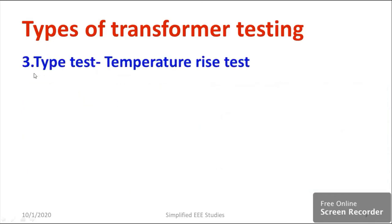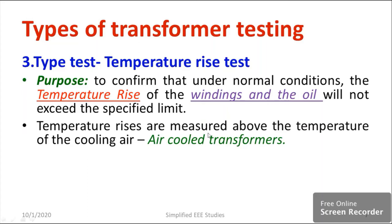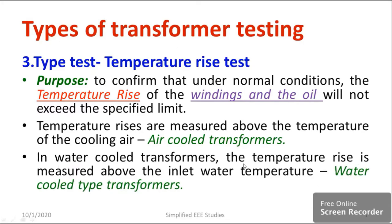I would like to discuss the third type of testing, known as the type test. The main purpose is to measure the temperature rise — whether it is normal or abnormal. To confirm that under normal conditions, the temperature rise of the windings and the oil will not exceed the specified limit. Temperature rises are measured above the cooling air temperature for air-cooled transformers, and above the inlet water temperature for water-cooled transformers.